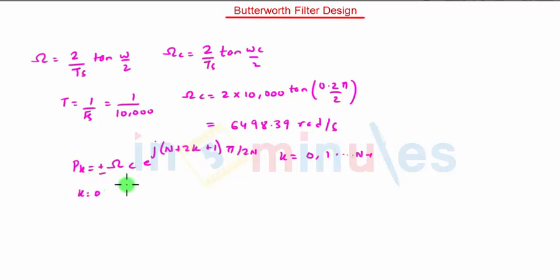So for K equals 0, P0 equals plus minus ωC e raised to j(N plus 1)π by 2N. So substituting the values of N and ωC we get plus minus 6498.39 e raised to j3π by 4.